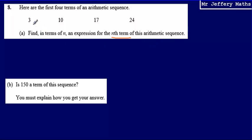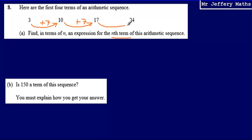So we're going to find the nth term here. The way we're going to do that is look at how we're getting from one term to the next. What I can see here is that I'm adding 7, adding 7, and adding 7. So that tells me immediately that the beginning part of my nth term is going to be 7n.